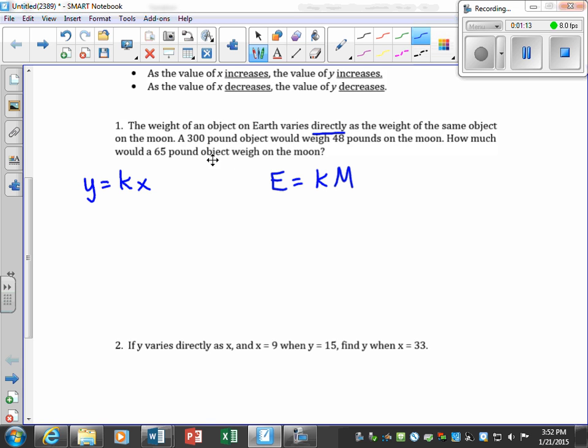A 300-pound object would weigh 48 pounds on the moon. So a 300-pound object on the earth would weigh 48 pounds on the moon. So for the moon, I'm going to put 48. The k is what we do not know, and in these problems, you want to always solve for k. So the first thing we're going to do is solve for k. You're going to divide both sides by 48, and then that would reduce to 25 fourths.